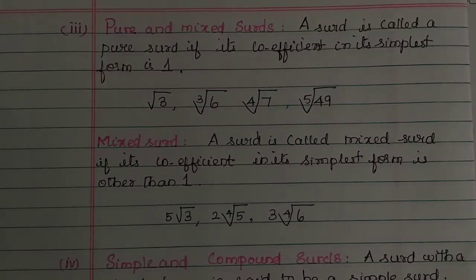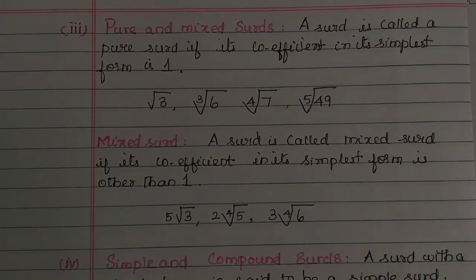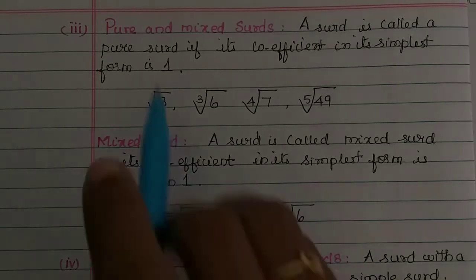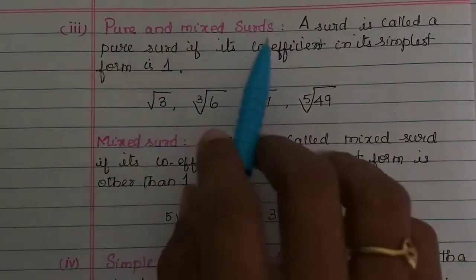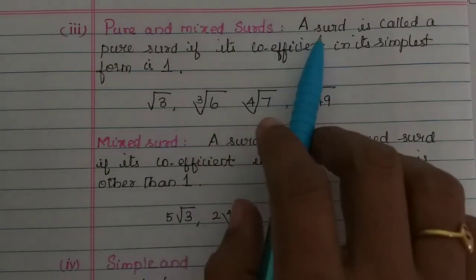Hi students, in this video we will talk about types of surds. We will talk about the third, fourth, and fifth types of surds. The third type of surds are pure and mixed surds.